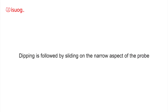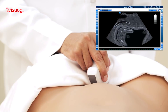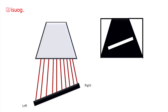I will explain the need to slide on the narrow aspect of the probe following dipping, using the example of the femur. In the diagram, you can see the femur is in an oblique view. The reason is that the surface of the probe is not parallel to the femur. Hence, the ultrasound waves take longer to travel to the left end of the femur compared to the right end. Therefore, the femur appears in an oblique view on the screen.